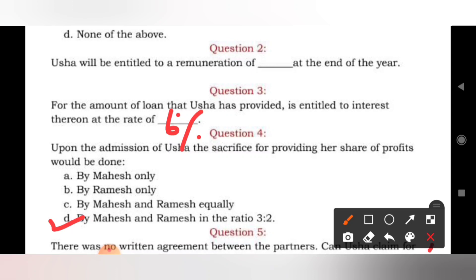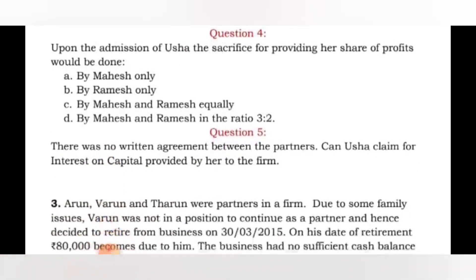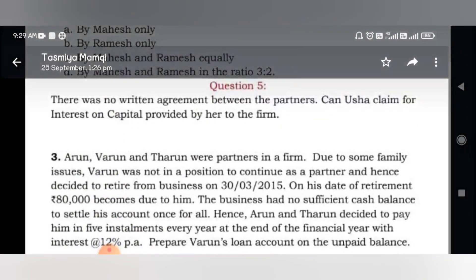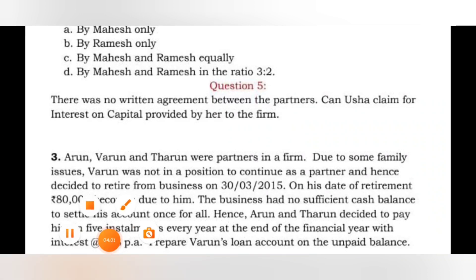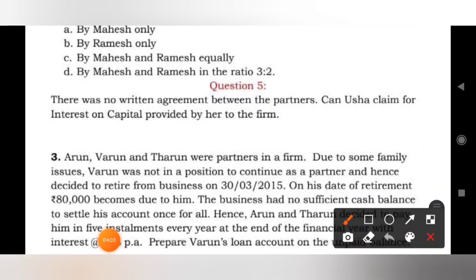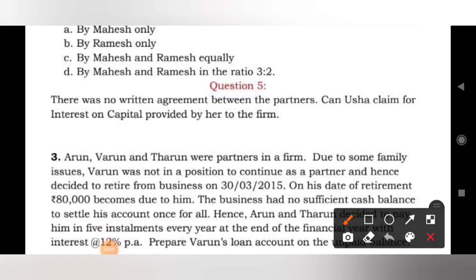Question number 5: there was no written agreement between the partners — can Usha claim interest on capital provided by her to the firm? When there is no partnership deed, they cannot claim interest on capital. So the answer is no. Usha cannot claim interest on capital because there is no written agreement.